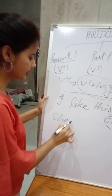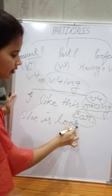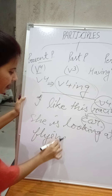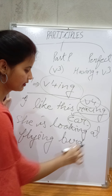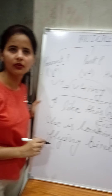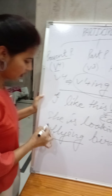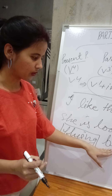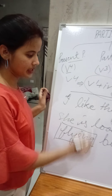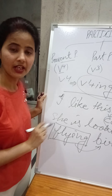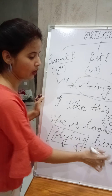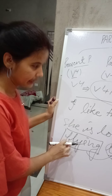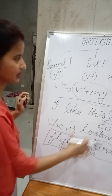Look at another example: she is looking at the flying birds. Which word consists of ING here? 'Flying.' Now see whether it has been used as an adjective or not. Just after this word, a noun is there, and it is describing the same noun. What kind of birds? Flying birds. So this word is present participle.